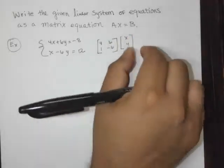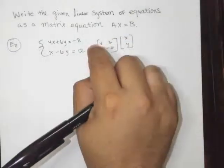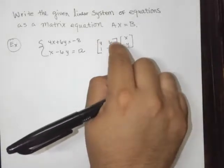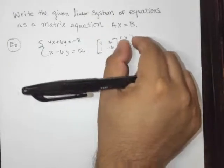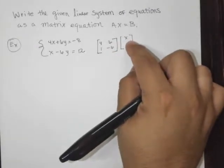And know that if you were to do this multiplication, this row by this column, you'd get 4x plus 6y, and here you'd get x minus 6y if you did the multiplication here. So this is what I call the variable matrix.